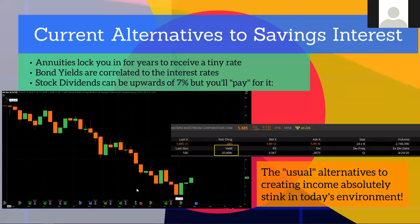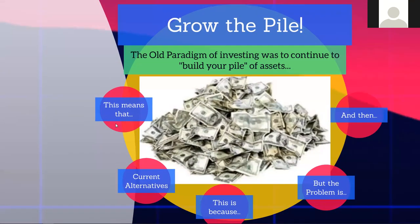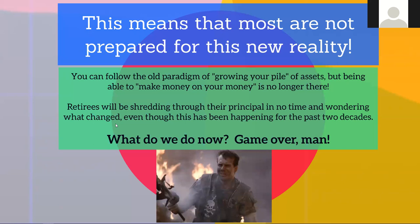There are some other alternatives to saving interest. Annuities lock you in for years at a tiny rate. Bond yields are correlated to interest rates, so they're not so good right now. Stock dividends can be upwards of 7% or even 20%, but you have to pay for it — it's inversely correlated to the performance of that stock. The usual alternatives to creating income absolutely stink in today's environment. Most are not prepared for this new reality.